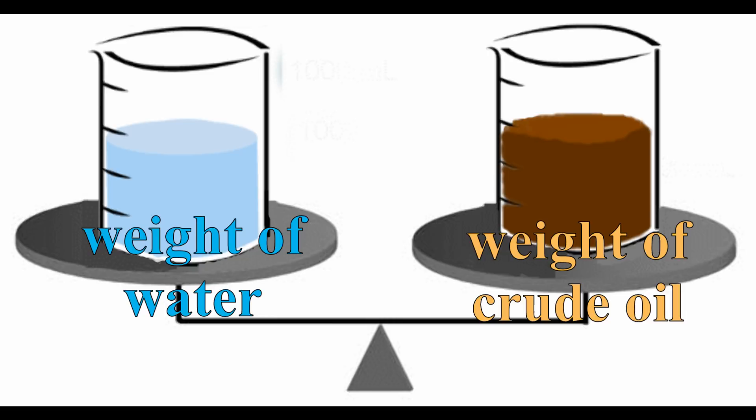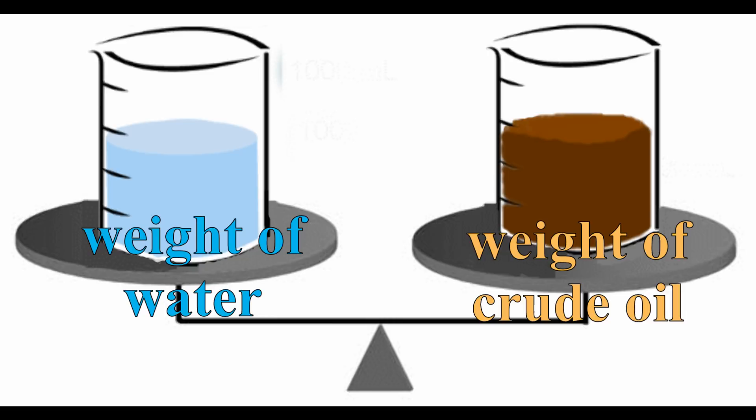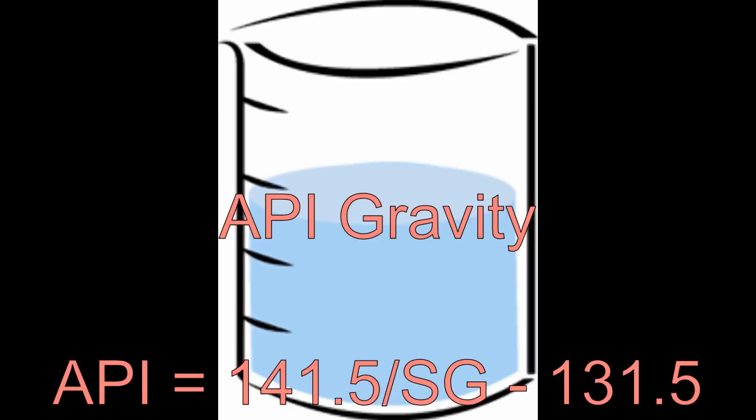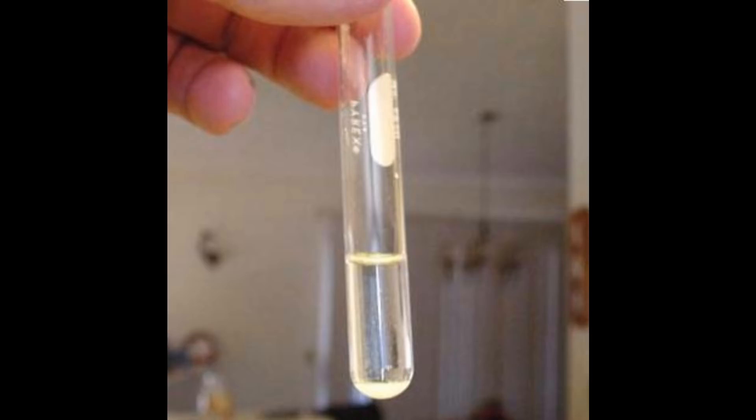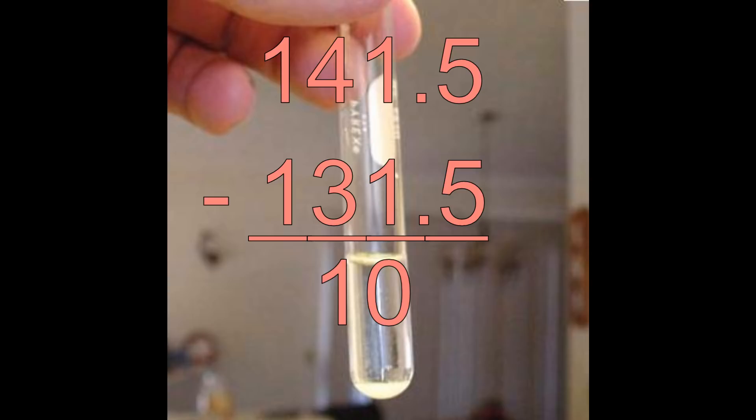In calculating API gravity in the laboratory, we use the formula API equals 141.5 divided by the specific gravity minus 131.5. For instance, if a cubic centimeter of water is 1, we subtract 131.5 from 141.5. Because API gravity is expressed in degrees, we therefore say that the API for water is 10 degrees.